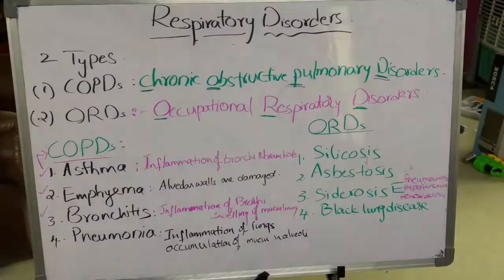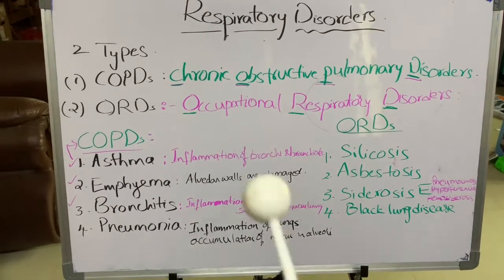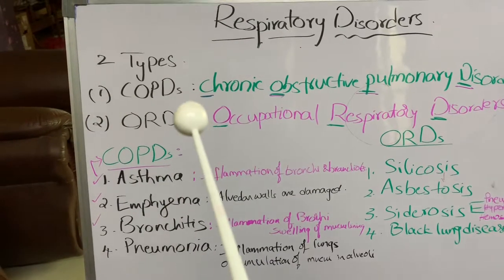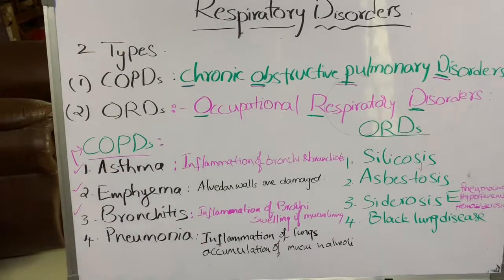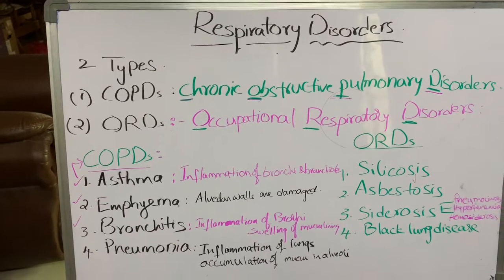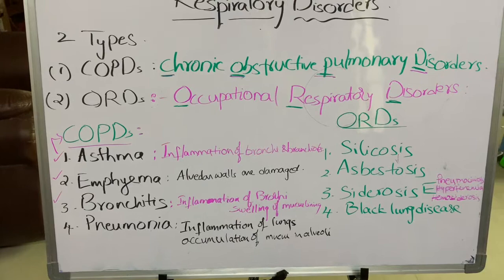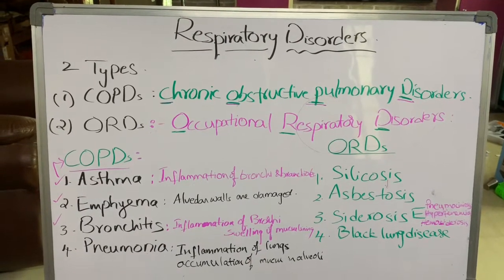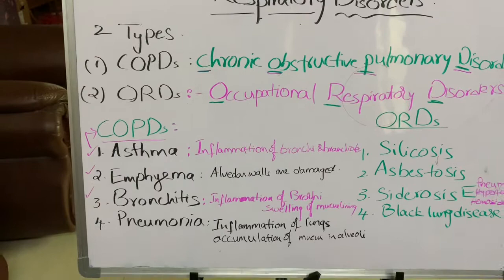Welcome to another lesson. Today we are going to learn about disorders of the respiratory system. Respiratory disorders are categorized into two types: COPDs and ORDs. COPDs means chronic obstructive pulmonary disorders, which are mainly related to chronic conditions that exist for a long time. ORDs are occupational respiratory disorders, which occur in people working in industries like stone industries, coal mines, etc.